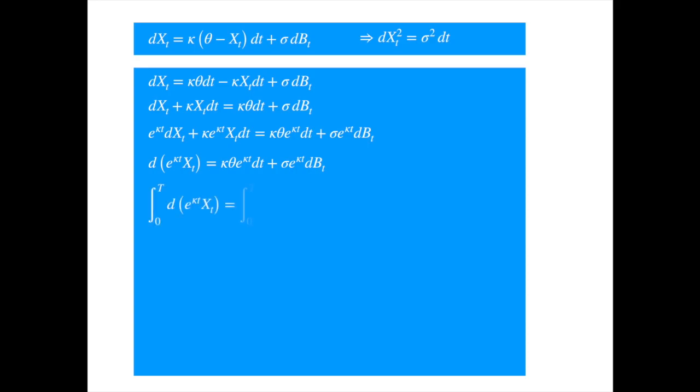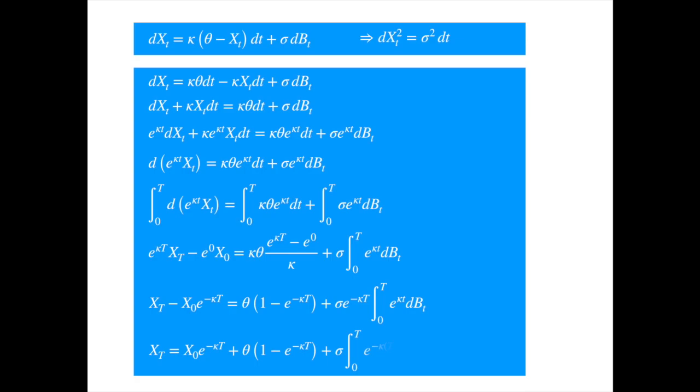Integrating from zero to t, evaluating the integrals, multiplying by the exponential of minus kappa times t to isolate x_t, and moving x_0 term to the right, we get the solution: X_t = X_0 e^(-kappa t) + theta(1 - e^(-kappa t)) + sigma integral from 0 to t of e^(-kappa(t-u))dB_u.